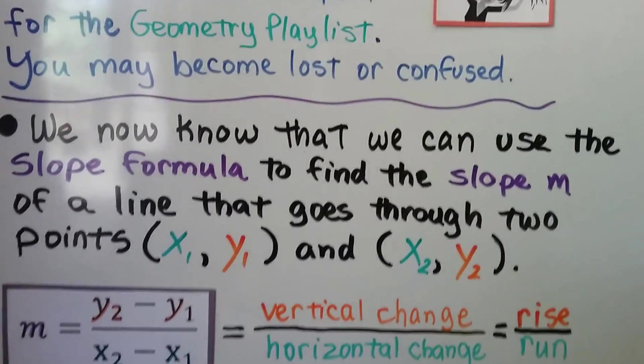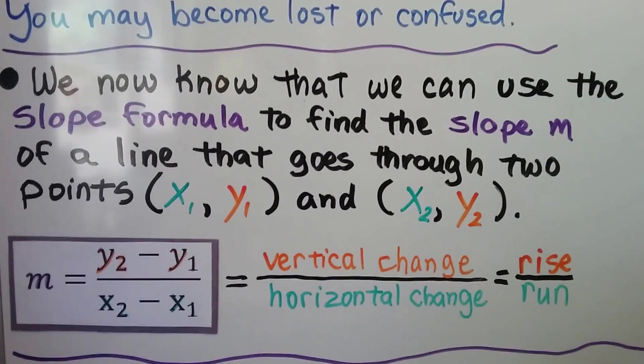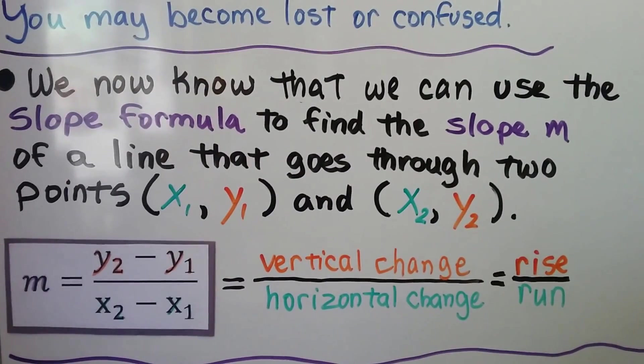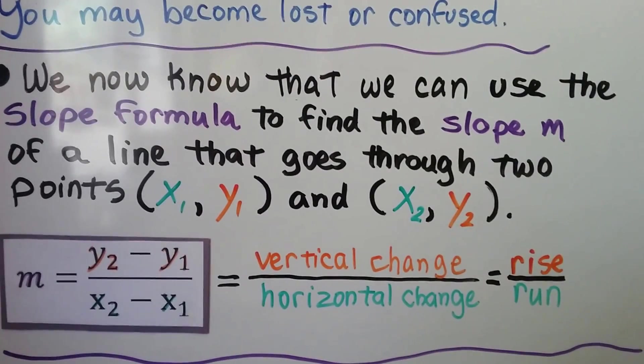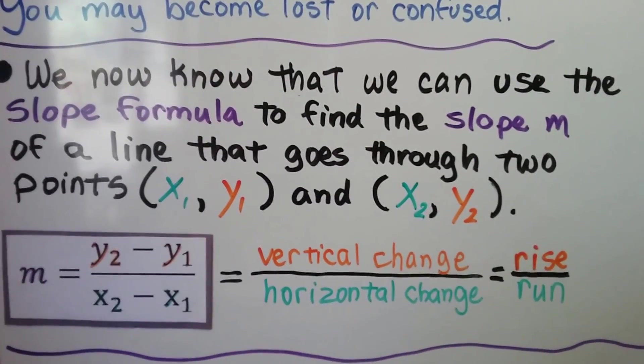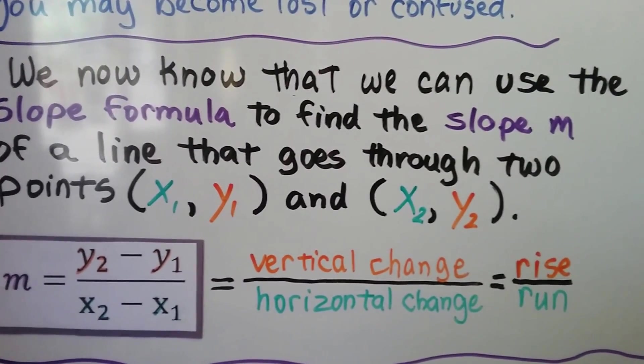We now know that we can use the slope formula to find the slope m of a line that goes through two points (x₁, y₁) and (x₂, y₂). It's the first point and the second point. And this slope formula is the vertical change over the horizontal change. It's the rise over the run.